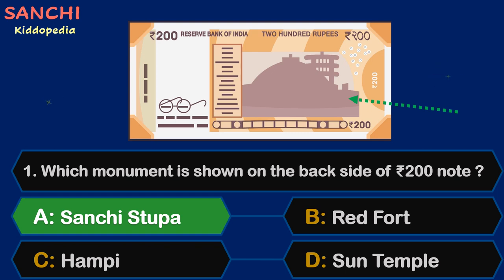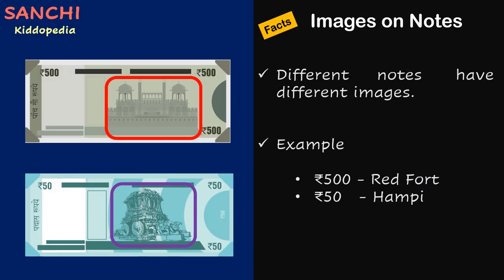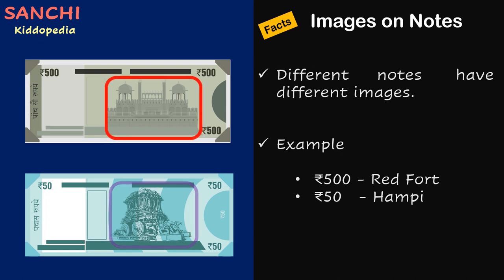Facts time! Different notes have different images. For example, the rupee 500 note has the Red Fort image, and the rupee 50 note has the Hampi image.